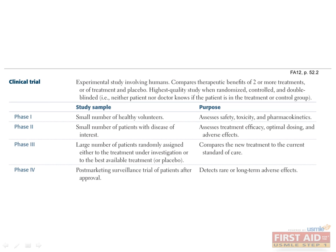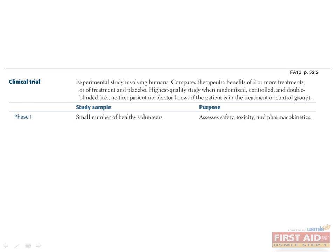Because they are getting lower than normal drug doses, you don't get any information on safety or efficacy. In contrast, classic phase one clinical trials study a new drug in 20 to 100 participants, usually healthy volunteers, to assess the safety, toxicity, and pharmacokinetics of that treatment. Phase two clinical trials study a small number of patients, usually on the order of hundreds, with the disease of interest to assess treatment efficacy, optimal dosing, and adverse effects.